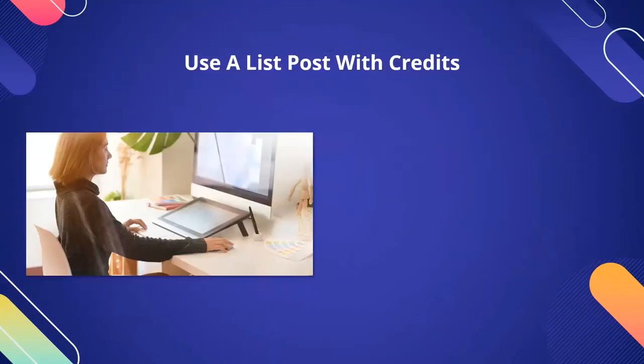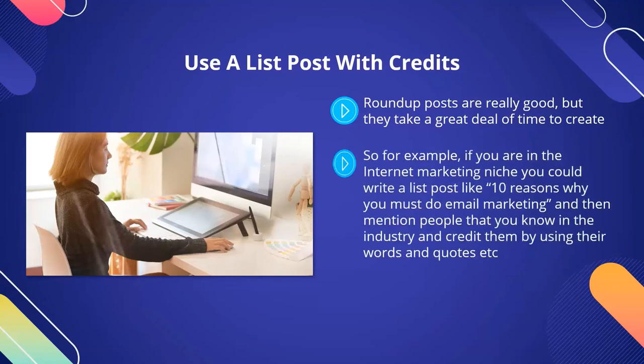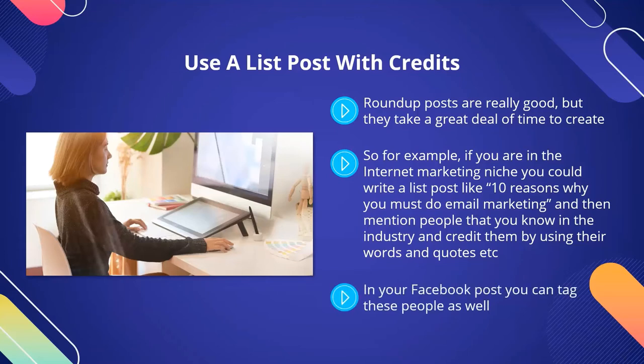Use a list post with credits. Roundup posts are really good, but they take a great deal of time to create. As an alternative, you can create a list post which mentions and provides credit to others without them having to do anything. So, for example, if you were in the internet marketing niche, you could write a list post like '10 reasons why you must do email marketing' and then mention people that you know in the industry and credit them by using their words and quotes. In your Facebook post, you can tag these people as well. Also, contact them directly using Facebook Messenger and send them an email telling them about your post and the fact that they are mentioned in it.